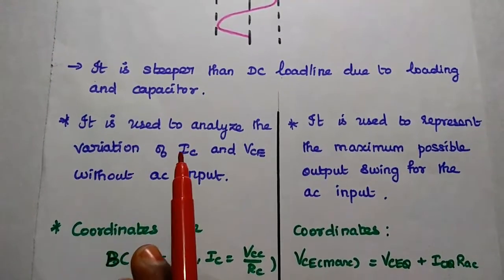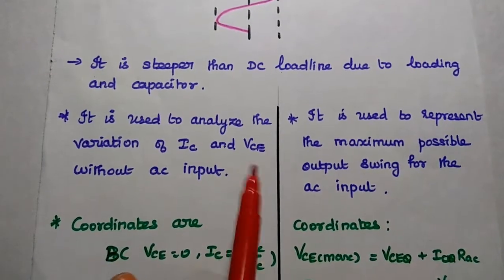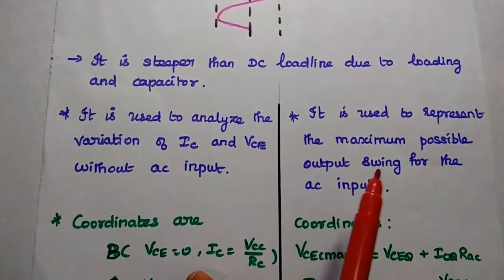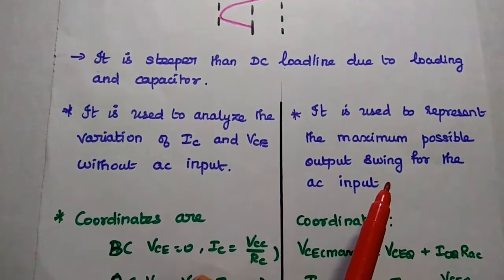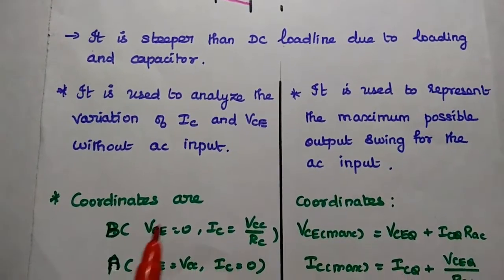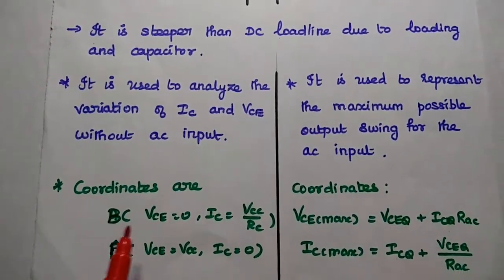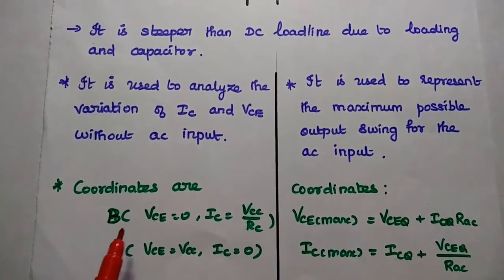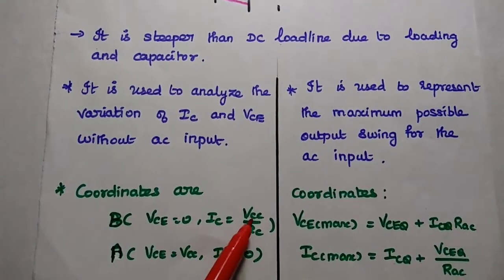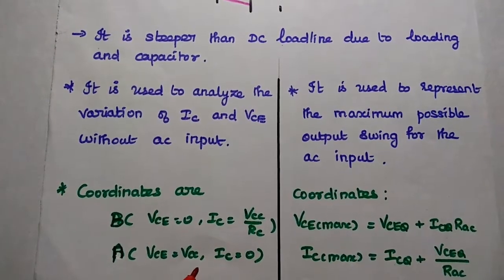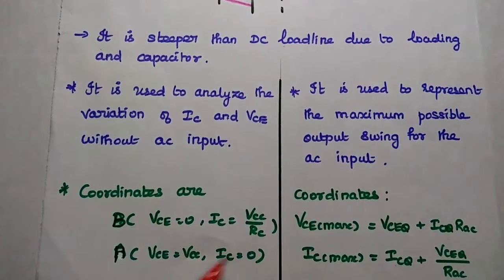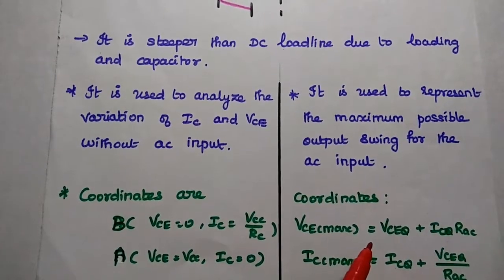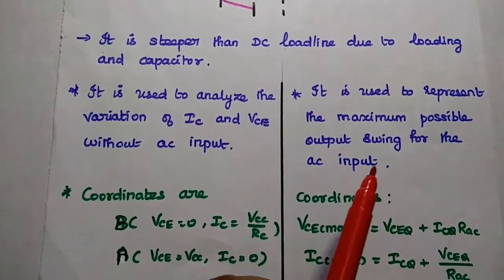The DC load line is mainly used to analyze the variation of output parameters without any AC input signal. The AC load line is mainly used to represent the maximum possible output swing for the given AC input signal. The DC load line can be drawn between two points: coordinate B where VCE equals 0 and IC equals VCC/RC, and coordinate A where IC equals 0 and VCE equals VCC — these represent the maximum values of the output signals.